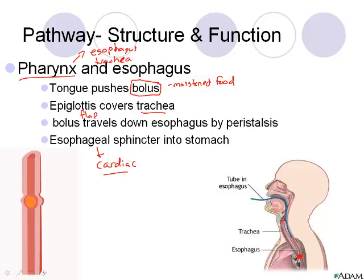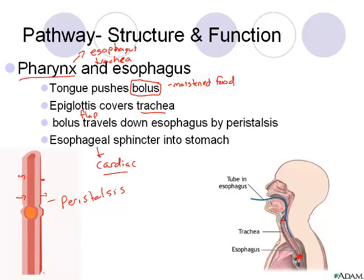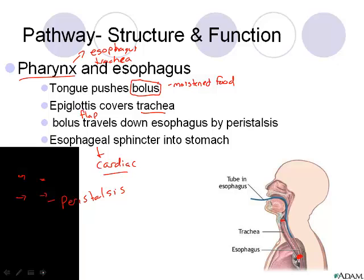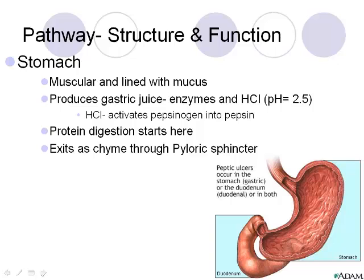This is an example of peristalsis, which is how food actually travels down the esophagus. It doesn't fall due to gravity — these are muscular contractions that push the food down, just like you'd push up a freezy in the summertime. We know it's not just gravity because if you're standing on your head you can still swallow, and it goes against gravity to enter your stomach.